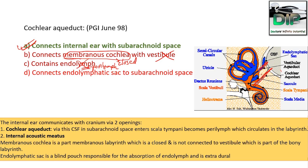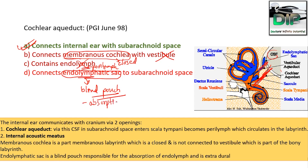The cochlear aqueduct drains CSF from the subarachnoid space into the Scala tympani, where there is perilymph. Option D is also wrong — the endolymphatic sac is a blind pouch, so it has no connection to the subarachnoid space. The endolymphatic sac is responsible for the absorption of endolymph, and it is extradural.